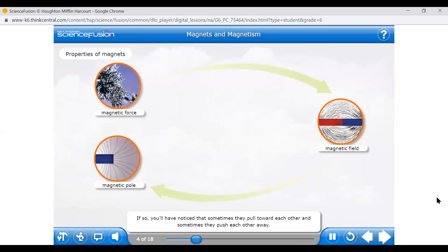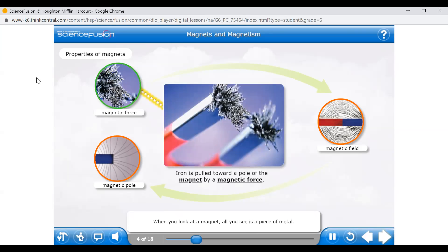Have you ever played with magnets? If so, you'll have noticed that sometimes they pull toward each other and sometimes they push each other away. The pull and push are much stronger when the magnets are close than when they're far apart. Click the images to learn more about the properties of magnets. When you look at a magnet, all you see is a piece of metal. But there's much more to it than what you see. A magnet attracts iron and materials containing iron, as you can see by the iron filings at the end of this magnet. The iron filings are pulled and held to the magnet by magnetic force, which is a force caused by moving or spinning charges.